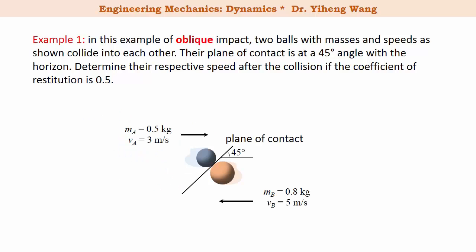So first we draw the line of impact that is perpendicular to the plane of contact. And now it is more convenient for us to set up our x-y coordinate system this way, with x-axis along the line of impact and y-axis perpendicular to the line of impact. And now we can resolve the two velocities into their respective x and y components, and by applying trigonometry we can quickly determine the values of these velocity components.